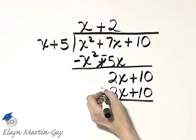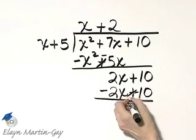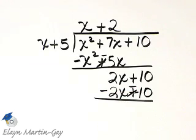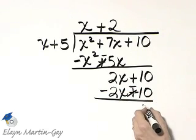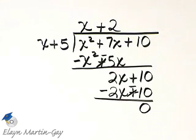Draw our line because we are next subtracting, so I'm going to change all of these signs. 2x minus 2x is 0. 10 minus 10 is 0. My remainder is 0.